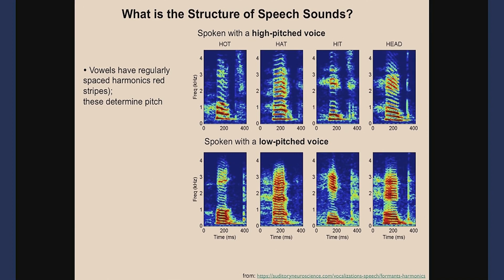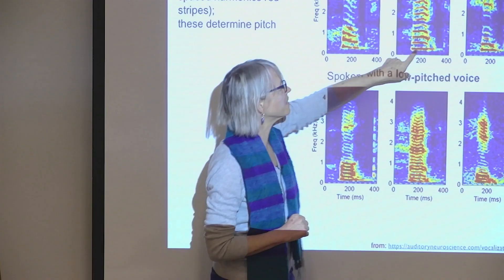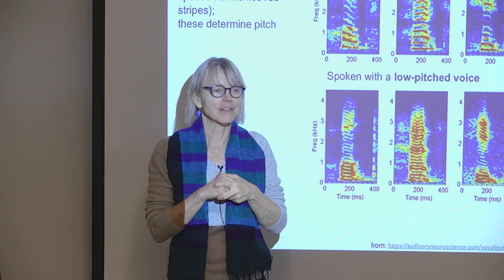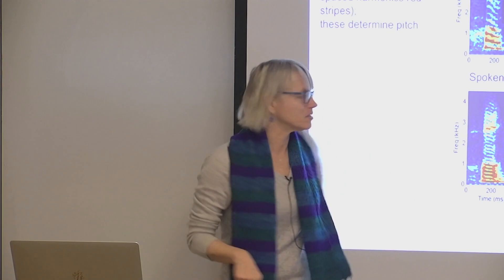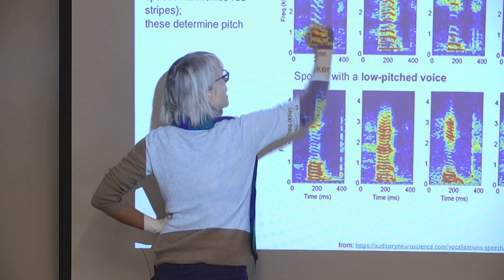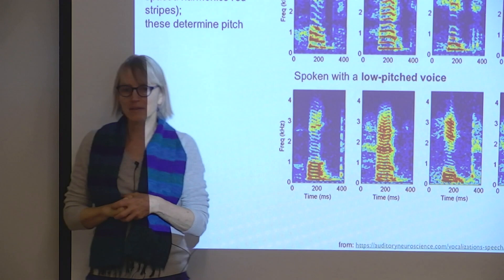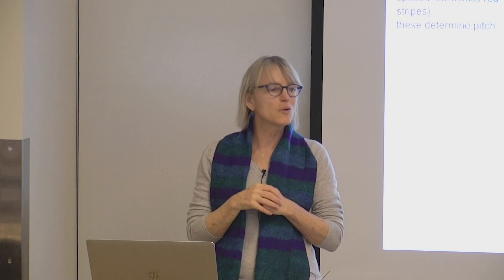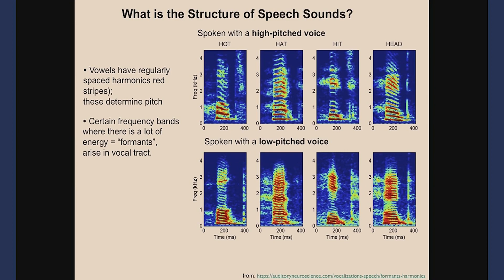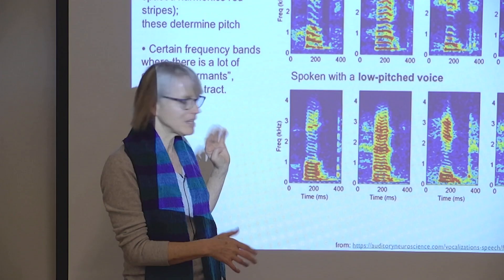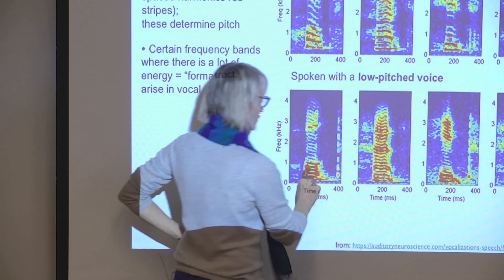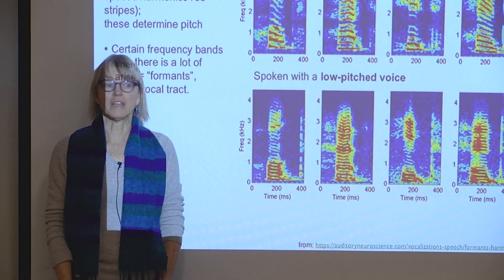Vowels have regularly spaced harmonics — the red stripes — making a pitchy sound. Voices have a pitch even in speech, used in intonation. Each set of stacked harmonics is a vowel sound. Consonants are the muckier things that happen before and after — no pitch, no harmonics, just kind of muck. People who study speech talk about formants — bands of frequency power. Certain formant frequency bands are particularly diagnostic for different vowels. For example, one mid-range frequency band is really diagnostic for distinguishing 'hat' from 'hot' or 'hit.'